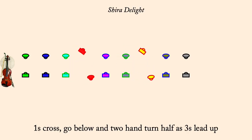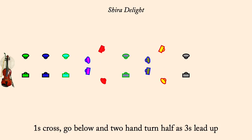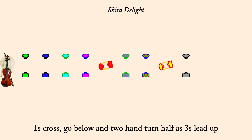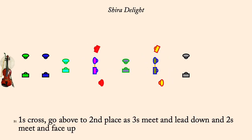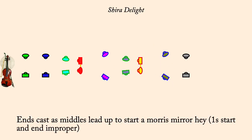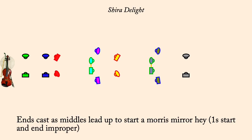Ones cross, go above, as threes lead down. End couple's cast, middle leads up, into a Morris mirror hay.